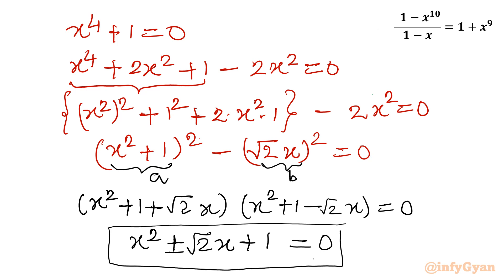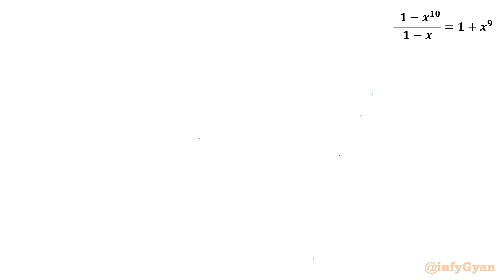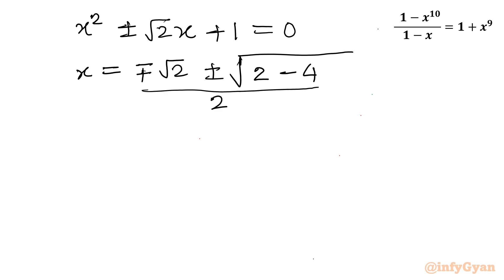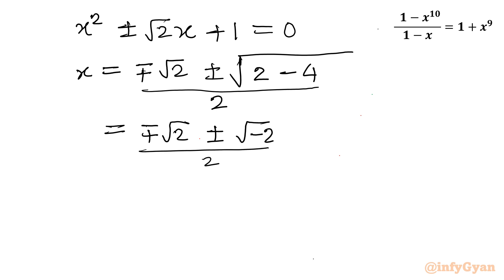This is a quadratic equation. Applying the quadratic formula with a = 1, b = ±√2, c = 1: x = (-b ± √(b² - 4ac)) / 2a = (∓√2 ± √(2 - 4)) / 2 = (∓√2 ± √(-2)) / 2. This simplifies to (±√2 ± i√2) / 2.